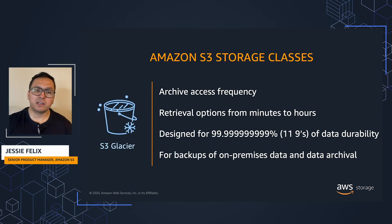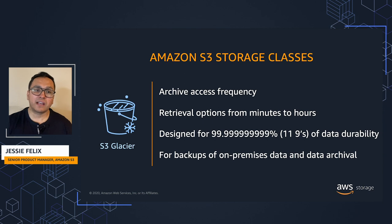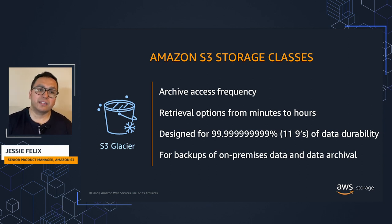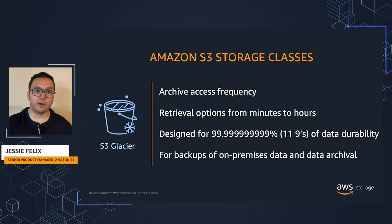We also offer low-cost archiving options for data that is rarely accessed. Amazon S3 Glacier and S3 Glacier Deep Archive are designed to be the lowest cost Amazon S3 storage classes, allowing you to archive large amounts of data at a very low cost. You can transition objects from any of the S3 storage classes or upload data directly into S3 Glacier and S3 Glacier Deep Archive. S3 Glacier is a secure, durable, and low-cost storage class for data archiving with three data retrieval options from a few minutes to hours.